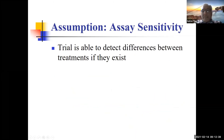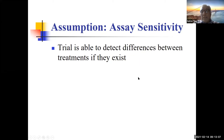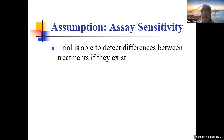The second assumption is assay sensitivity: the trial must be able to detect differences between two treatments if they exist. If the trial is designed such that a true difference cannot be demonstrated, you lose assay sensitivity. A simple example: if sample size is not large enough and the test drug is truly inferior to active control, you may fail to differentiate them and incorrectly claim non-inferiority. Introducing a margin requires maintaining a large enough sample size to preserve assay sensitivity.